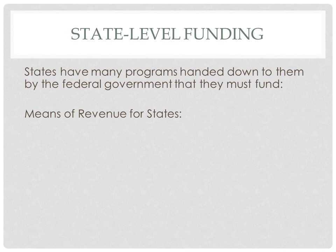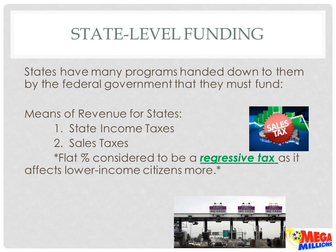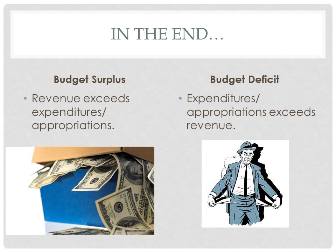Here are some means of revenue that states have for bringing in money. Some states have their own state income tax. Some states charge a sales tax when you purchase products within their state — typically a flat percentage, which some refer to as a regressive tax since it affects lower-income people more than higher-income people. Some states also charge tolls and gas taxes, and have their own lotteries and gaming systems like horse racing and slot machines as another way to bring in funding. In the end, putting together a budget will lead to either a budget surplus — where revenue exceeds spending — or a budget deficit, which has been more common in recent decades, in which we are spending more money than we're actually bringing in as revenue.